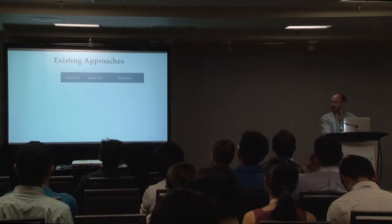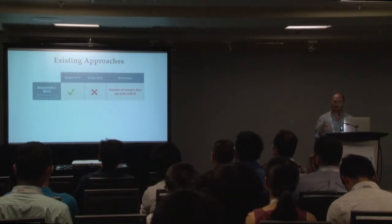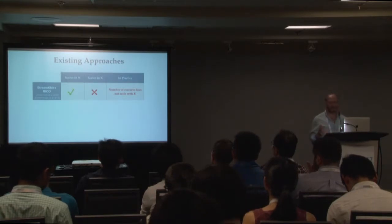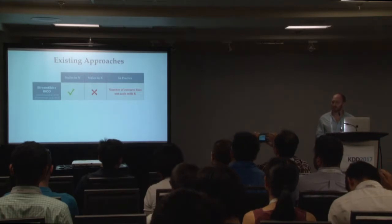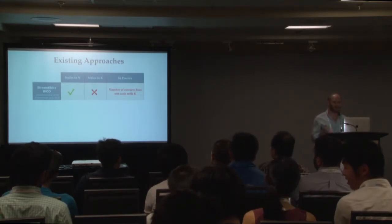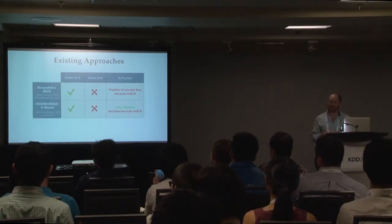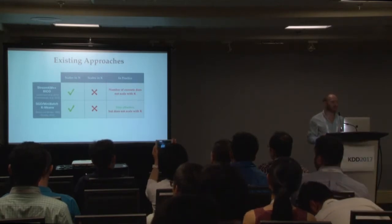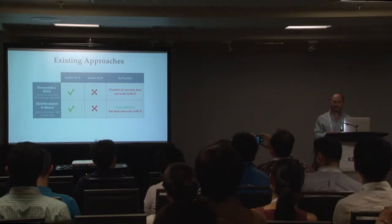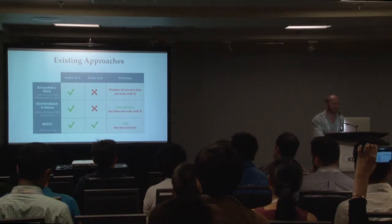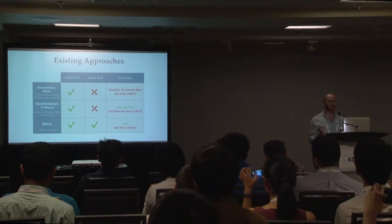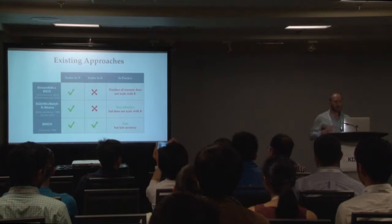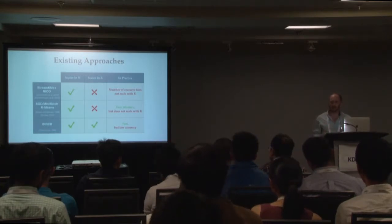Where can we look for inspiration? One idea is the core set family of algorithms — construct a small but representative sample, run an expensive algorithm on it, then use the clustered core set to cluster remaining points quickly. However, it can be very difficult to extract a small representative sample when you want a lot of clusters. There are also stochastic gradient descent algorithms like minibatch k-means, which is excellent in practice, but also has an inner loop that iterates over all clusters, scaling linearly in k. Finally, there's Birch — a hierarchical clustering algorithm known to scale well in both n and k — but practitioners have found it doesn't produce as high-quality clusters compared to other algorithms.